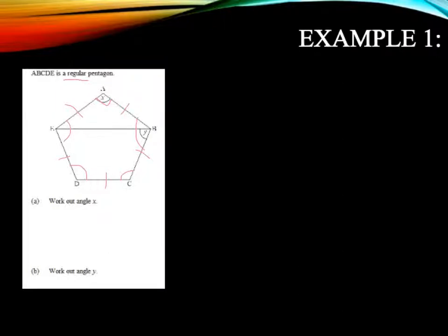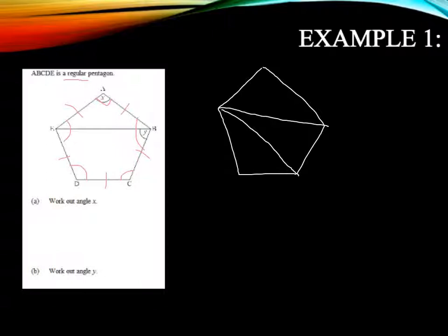Now to work out the size of angle X, we're going to have to use some facts. Let's think about our pentagon. Now a pentagon I can split up into a series of triangles, and I would recommend that you do this for any of the polygons that you might see. Six sided, seven sided, eight, nine, ten, whatever. We can split them up into triangles. The reason for doing that is that we know that angles in a triangle add up to 180 degrees.